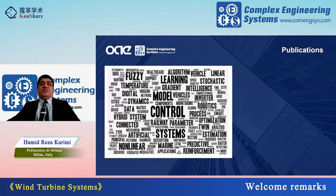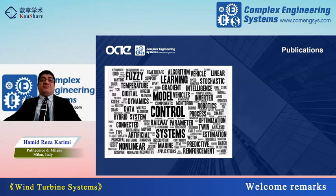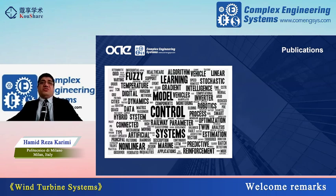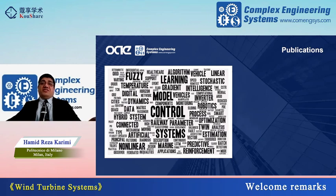If you look at the scope of the journal, on this page you can see the keywords that basically represent the scope of the journal. Of course, there is more complexity in the journal system, including additional keywords you can see on this page that can be related to the journal.